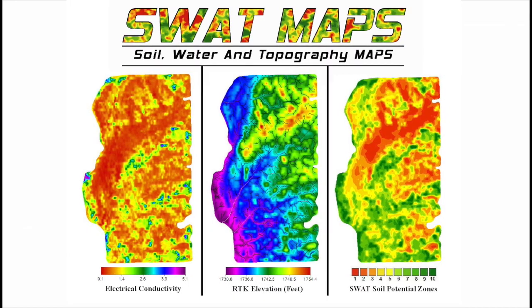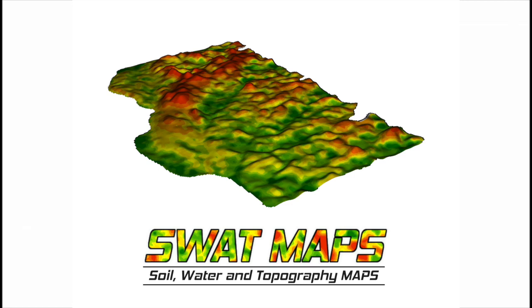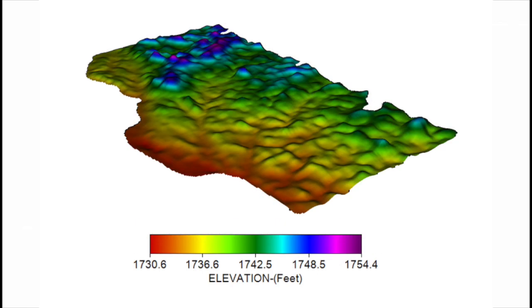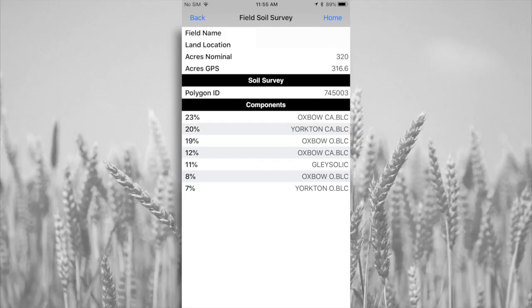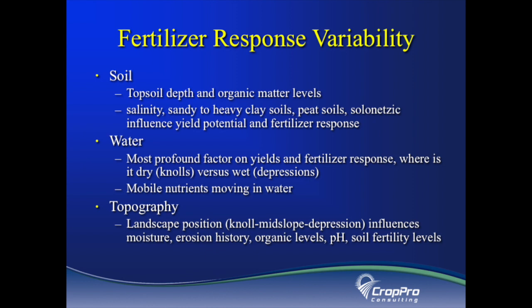We started our process by building maps of soil potential. Soil water and topography maps, or SWAT maps, are maps created from using layers such as electrical conductivity, RTK elevation, soil survey, and can also use other forms of information such as soil organic matter and many other types of soil sensors.